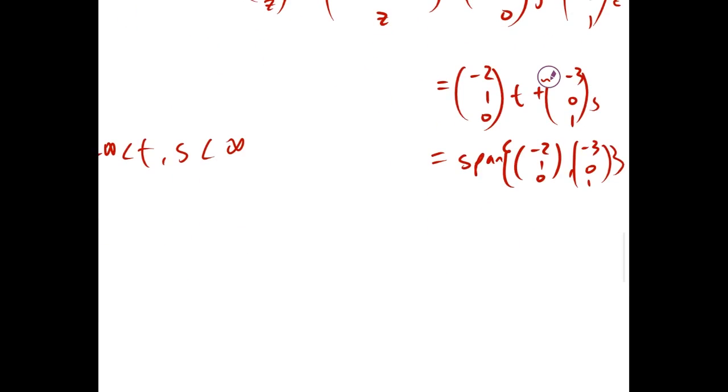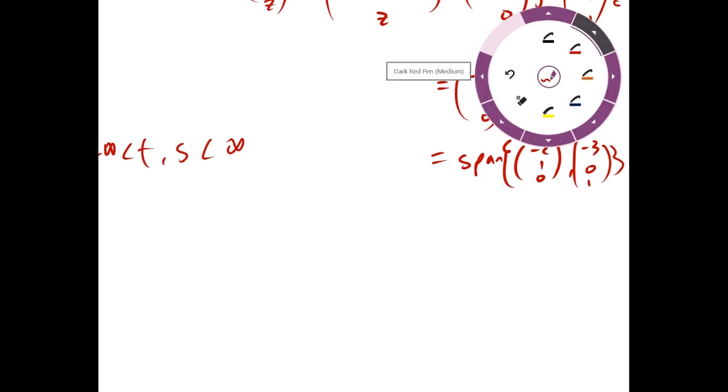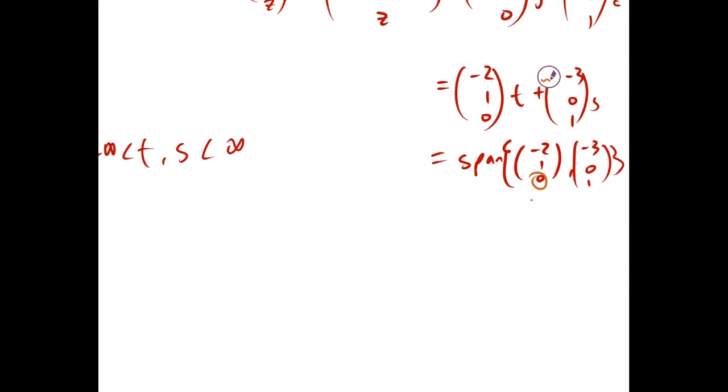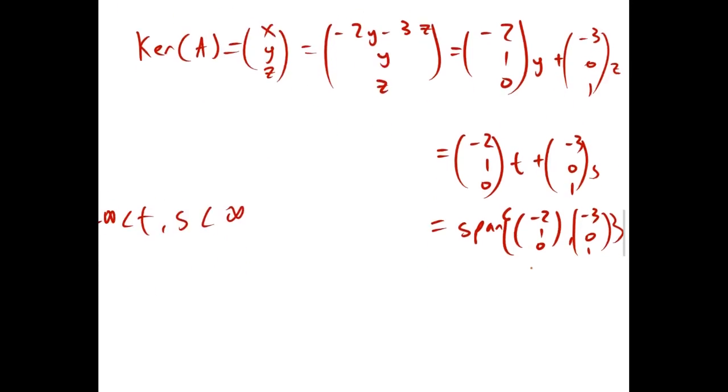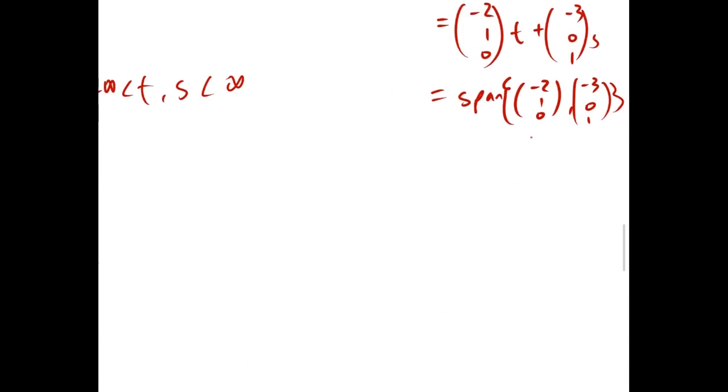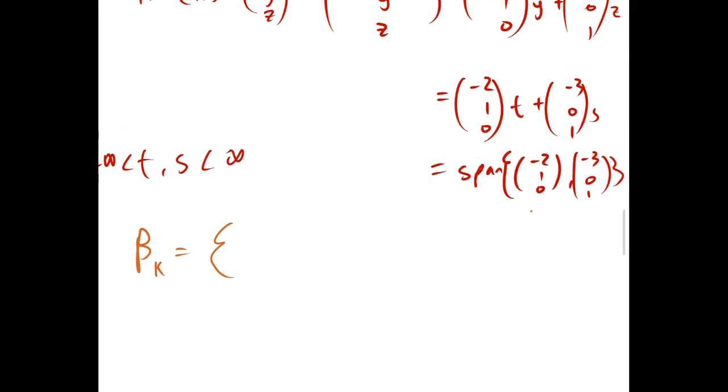And we had to check for linear independence, but we can all tell just by looking at it that these are. Because we have a 0 here and a 1 here, and then 1 here and a 0 here. So, if we wanted the basis for the kernel, we could just write negative 2, 1, 0, and negative 3, 0, 1. So, we omit the span. If we say span, we have an infinite amount of vectors. But if we just include these two, we have a basis.